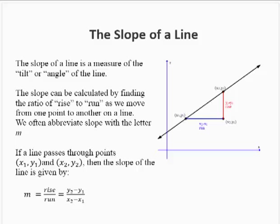If a line passes through the points x1, y1 and x2, y2, then the slope of the line is given by m equals rise over run, which is y2 minus y1 over x2 minus x1.